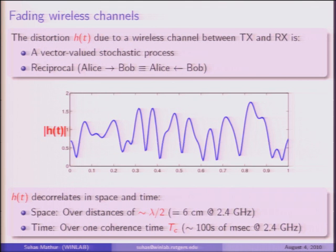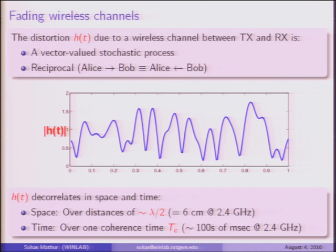Audience question: How did you get the hundreds of milliseconds of coherence time difference? The coherence time is a function of the rate of motion in the environment—basically you can calculate the Doppler for that speed and derive the coherence time from that. It is also a function of the relative motion between users. If nothing is changing in the environment, coherence time is infinite. But practically speaking, things change—people are walking around, and so on.